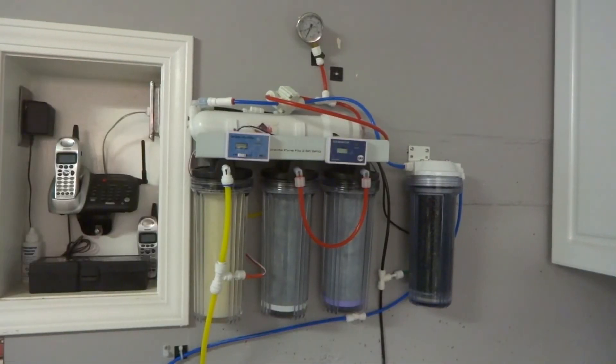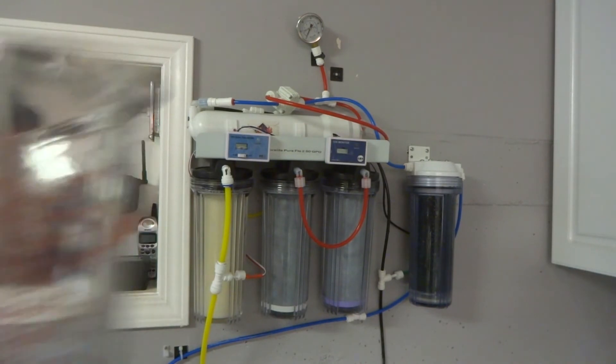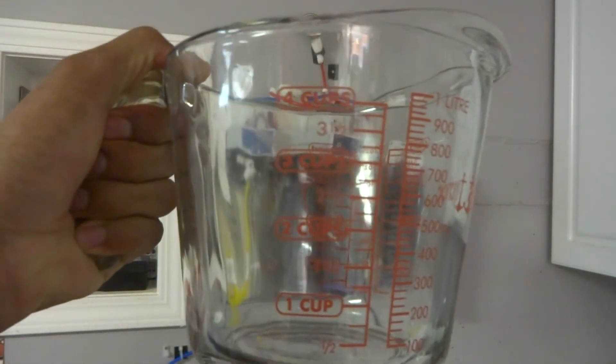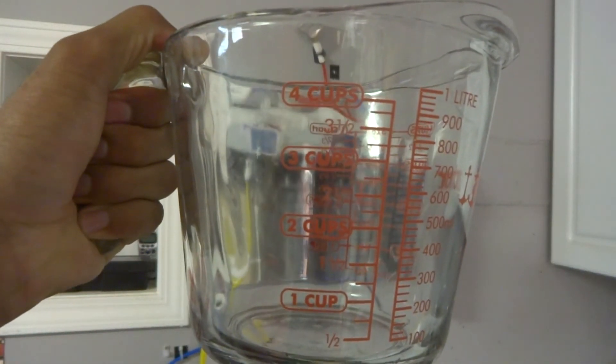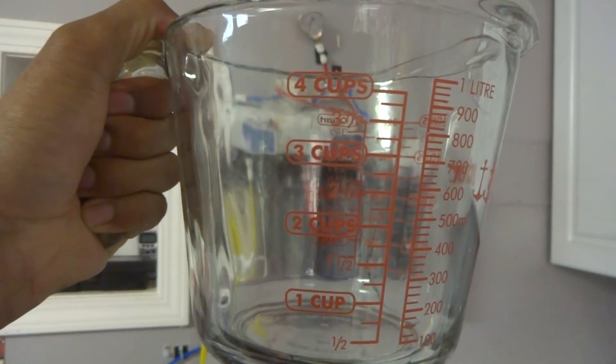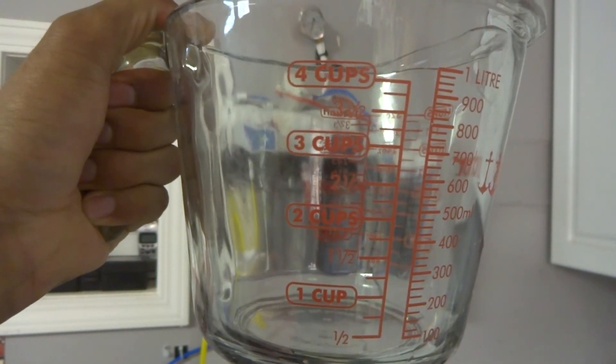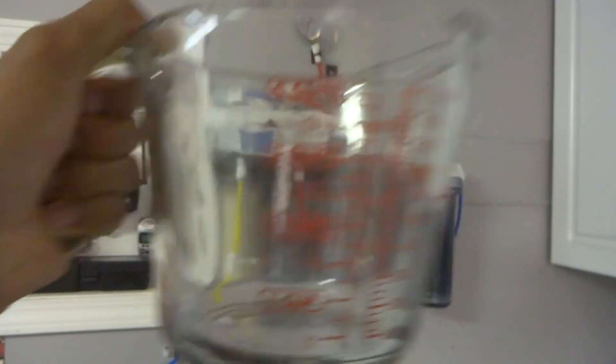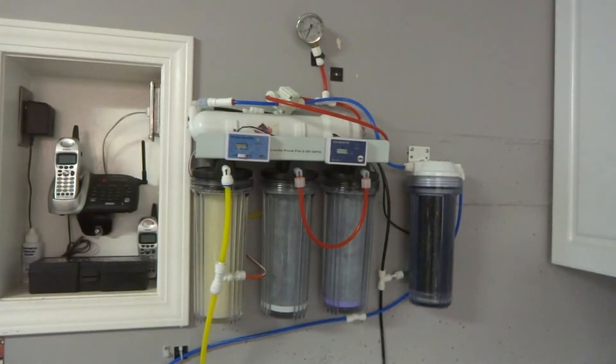A simple way to figure out the ratio of your RODI or RO unit is to take a measuring cup, put the product line in here, let it run for one minute, note the measurement, and then take the wastewater line, let it run for one minute, take the measurement, divide the wastewater to the product water, and that should give you a ratio.